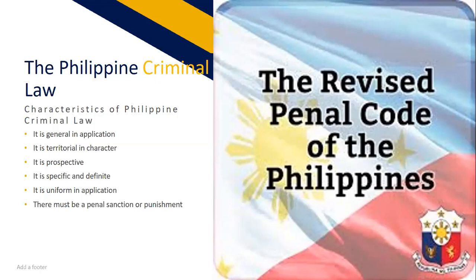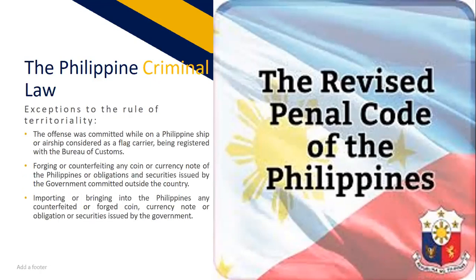Exemptions to the rule of territoriality include: offenses committed while on a Philippine ship or airship considered as a flag carrier registered with the Bureau of Customs; forging or counterfeiting any coin or currency note of the Philippines or obligations and securities issued by the government, committed outside the country; and while being public officers or employees who commit an offense in the exercise of their functions, or commit any of the crimes against national security and the law of nations. These will be further discussed in the major subject criminal law.